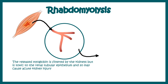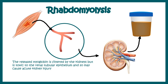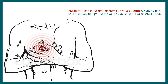When myoglobin enters the bloodstream it is filtered by the kidneys, and it is very toxic to the renal tubule and renal epithelium. It is ultimately secreted in the urine, causing the urine to appear blackish or reddish — specifically described as cola-colored urine — which is characteristic of rhabdomyolysis.